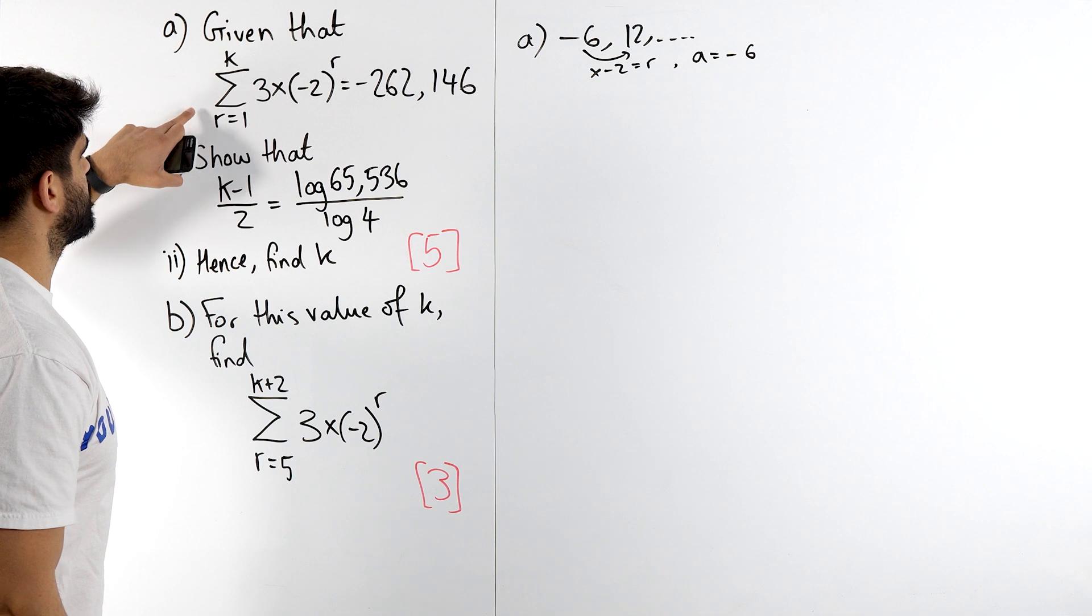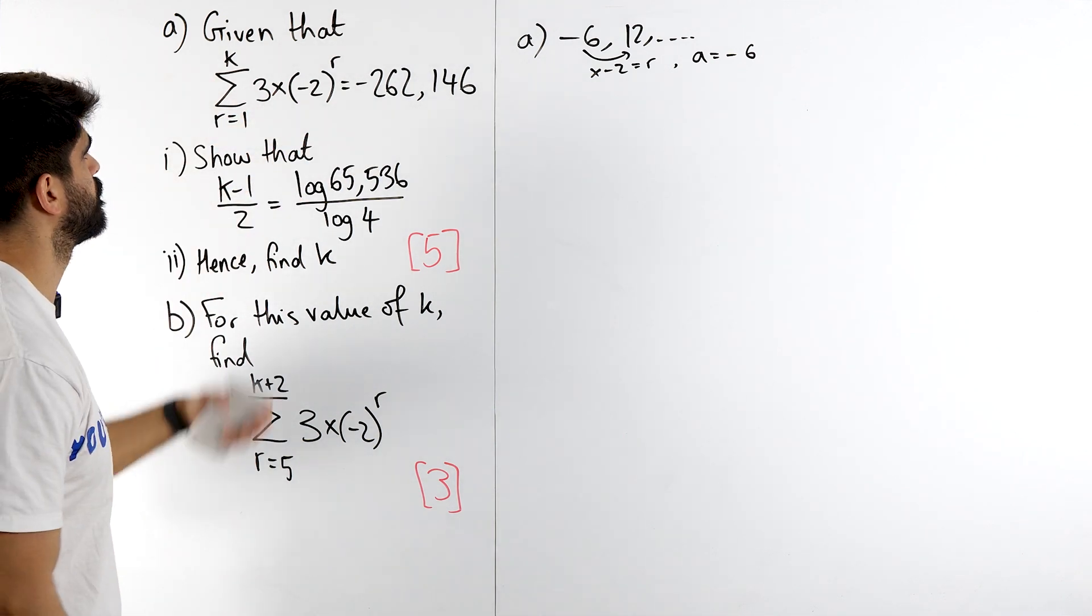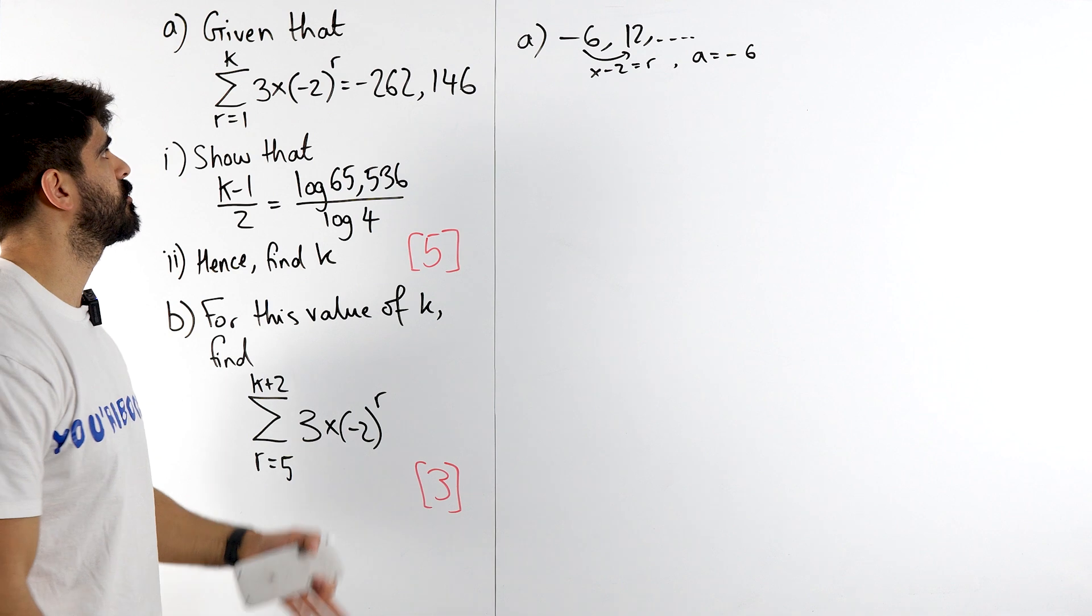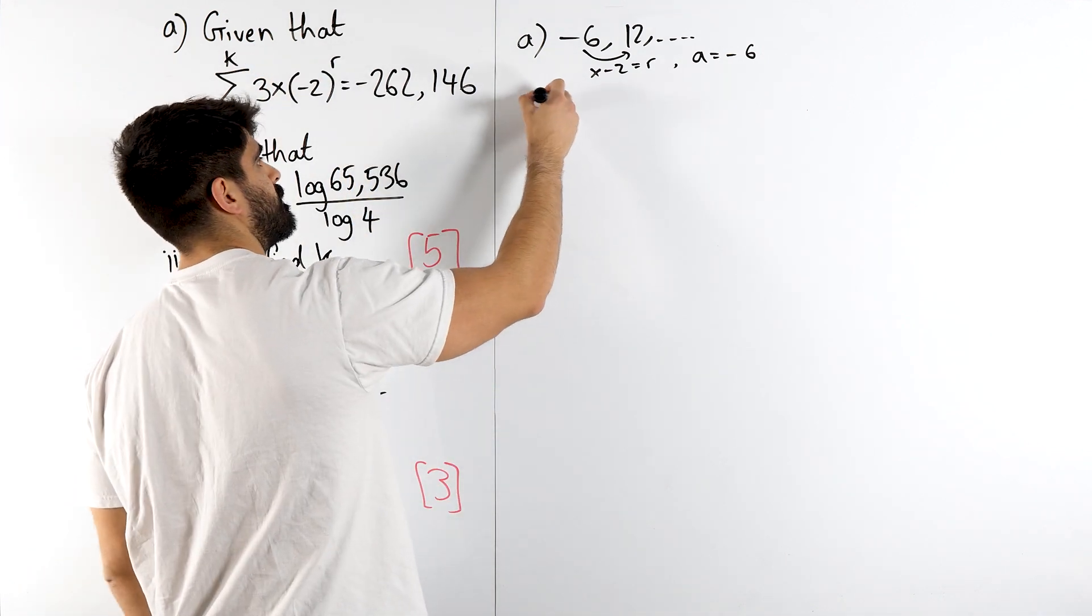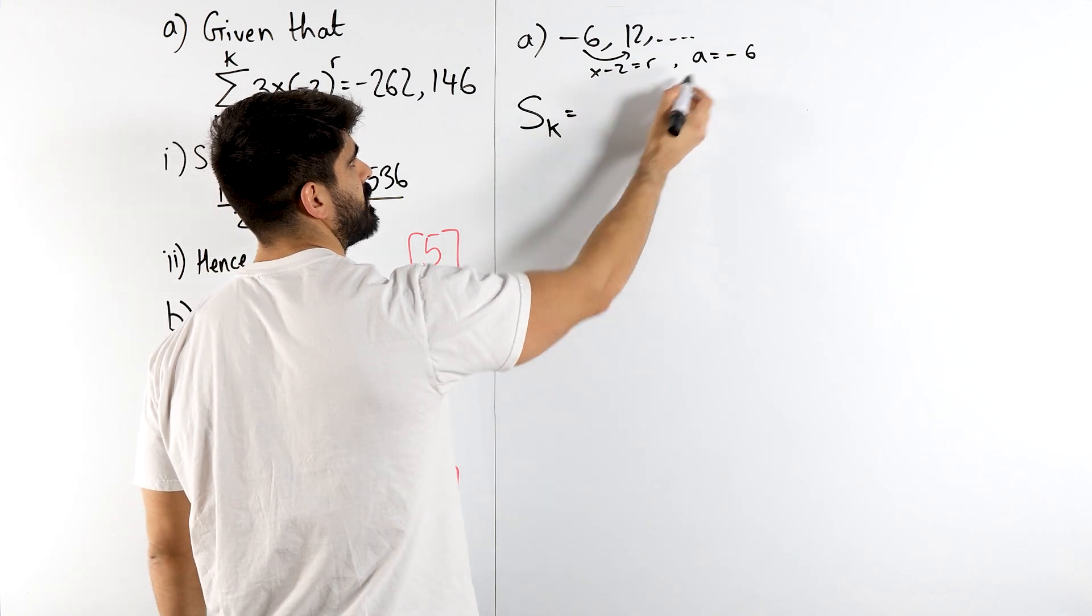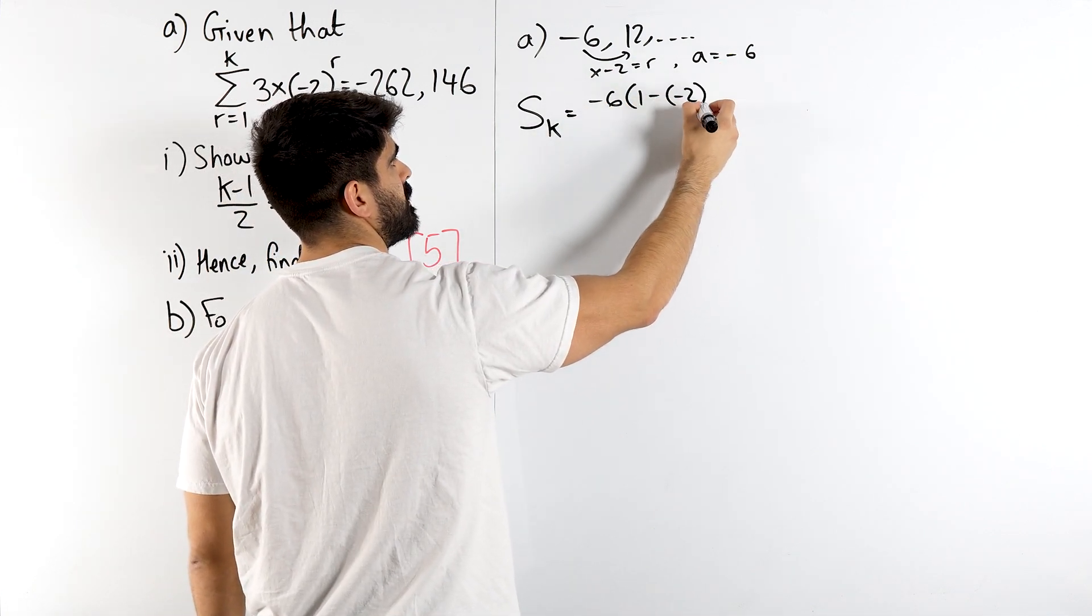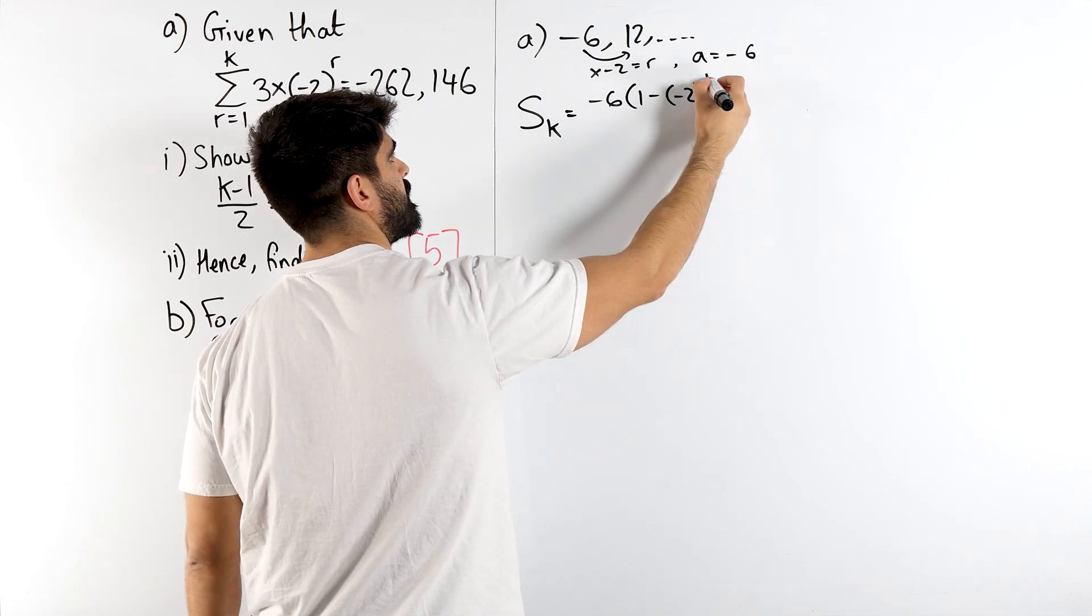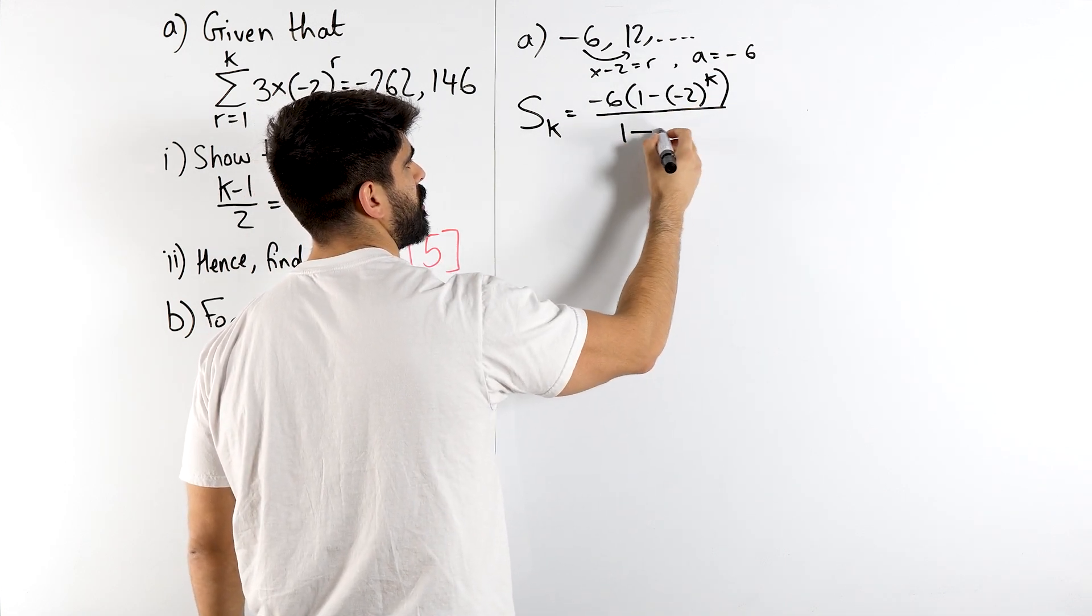So they're saying that sum from r equals 1 to k is this. We need to show that this situation is true. So now that we know it's a geometric sequence, what is the sum of a geometric sequence up to k terms. The sum of k terms is a, 1 minus r to the power of n, n is k this time, all over 1 minus r and r is minus 2.